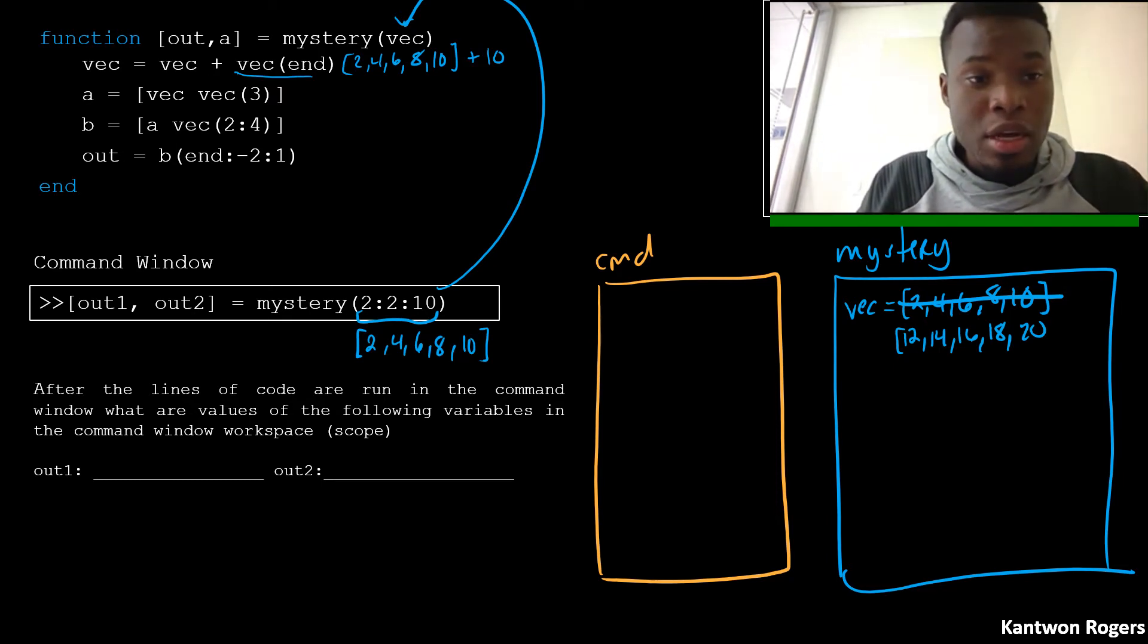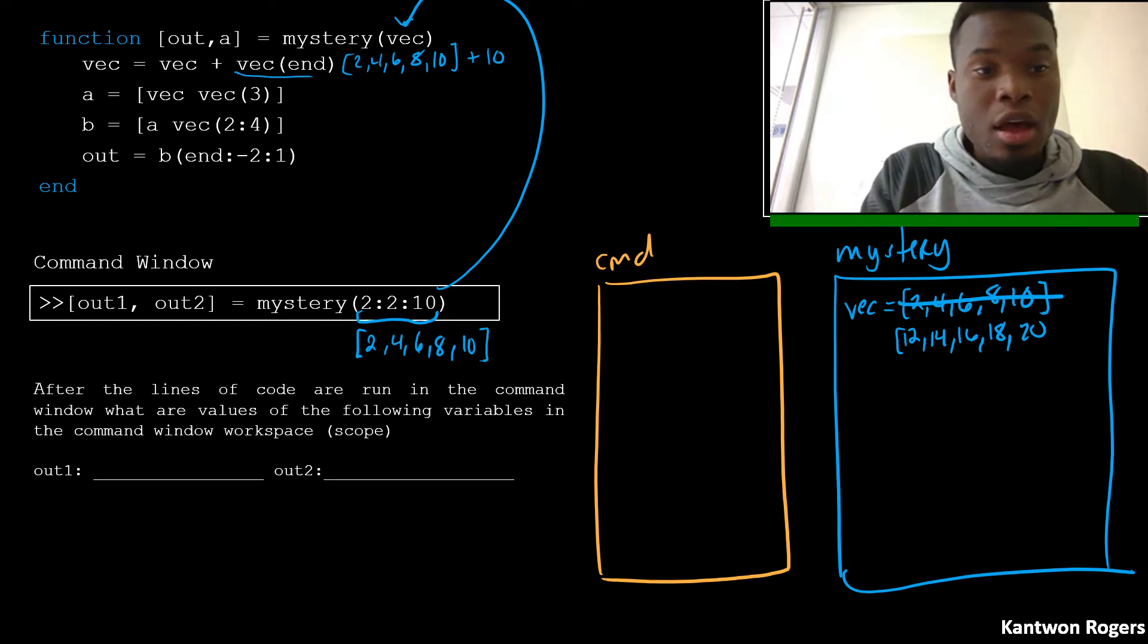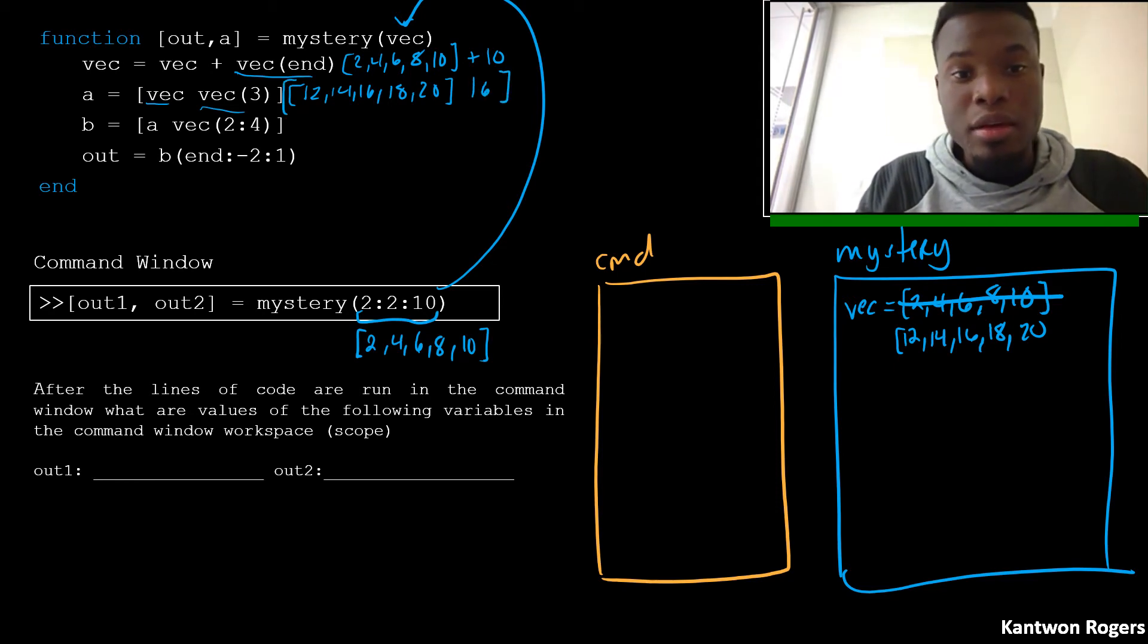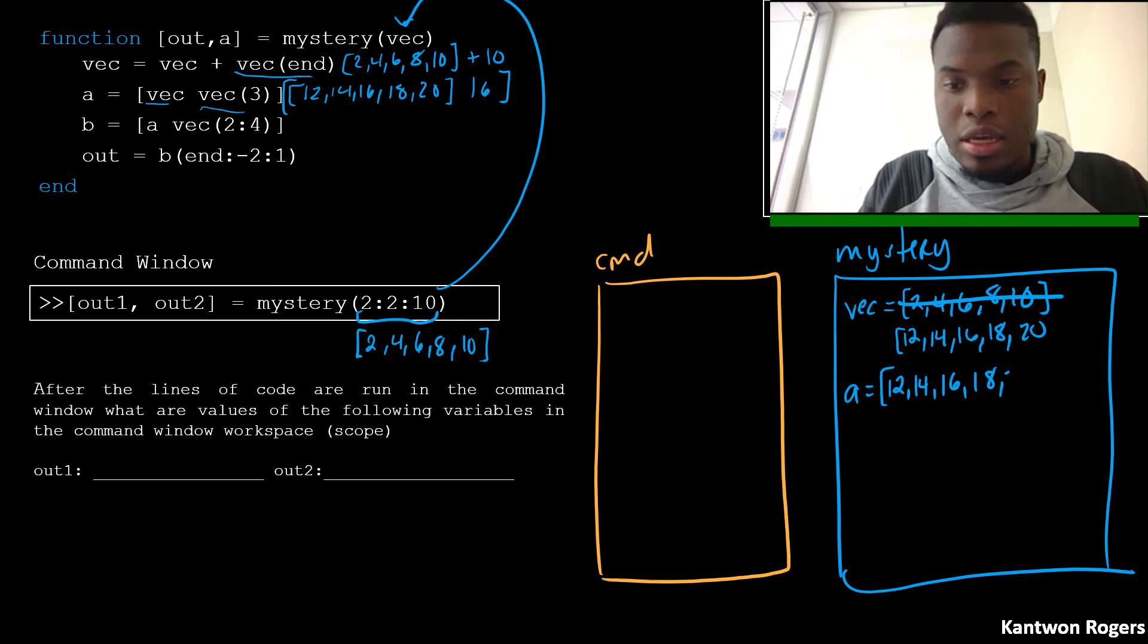So now on our next line, we have concatenation happening. We're concatenating our current vec with the third element inside of our vector. So therefore, our current vector is 12, 14, 16, 18, 20. And we're concatenating that with the third element, which is 16. We're creating a vector with the same as our original vector, but 16 at the end. And we're assigning this to A. So therefore, A is going to be 12, 14, 16, 18, 20, 16 again.